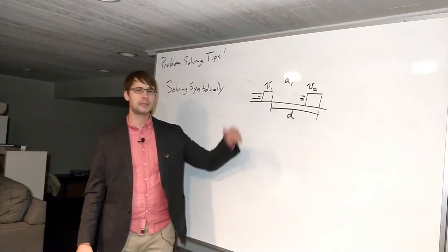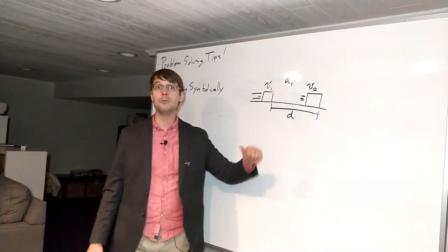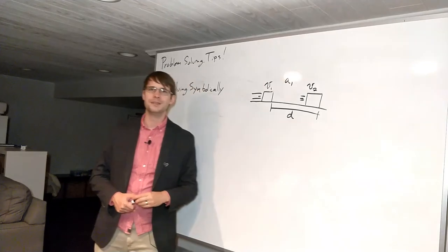We've got an object with a velocity v1 at the beginning, velocity v2 at the end, an acceleration we'll just call it a1 in this case, and it travels a distance of d.